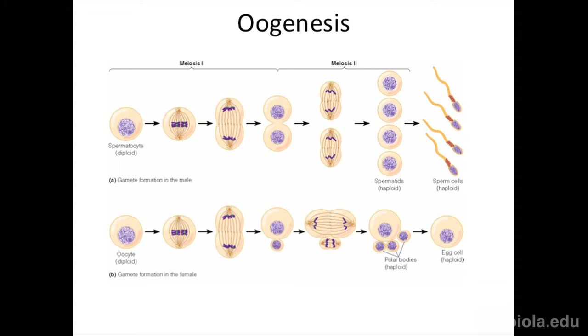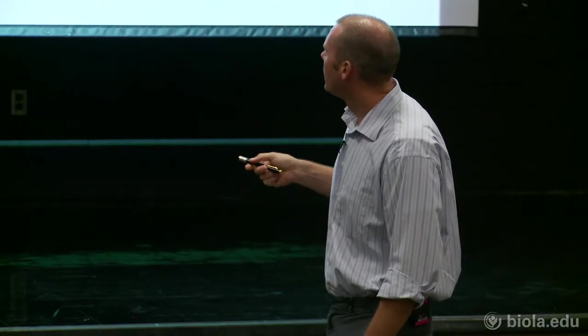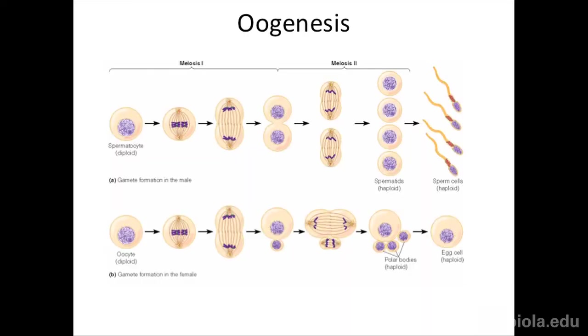You start with a germ cell. In female gonadal tissue, we call it the oocyte — spermatocyte if in male tissue, oocyte if in female ovary tissue. The same mechanism happens in the first round of meiosis: align homologous chromosomes, recombine, separate. What's unique in females is that in sperm, the first meiotic cell division is symmetrical — two cells of identical size. In the female ovary, that first division is asymmetric: one cell gets the bulk of cytoplasm, organelles, and proteins; the other is just chromosomes and a tiny bit of cytoplasm. We call this tiny cell a polar body.